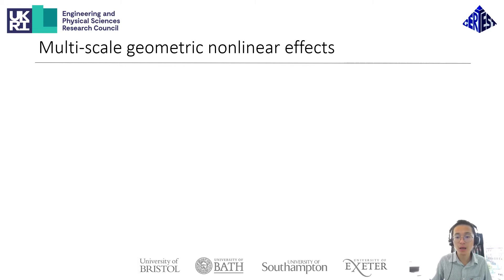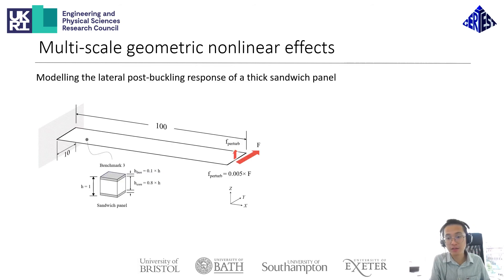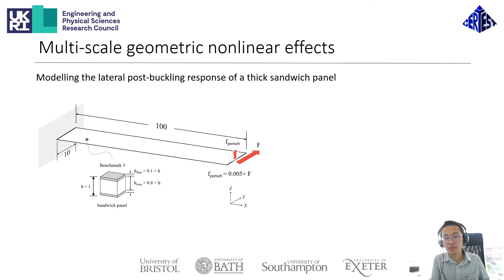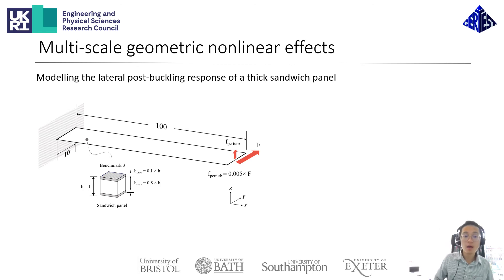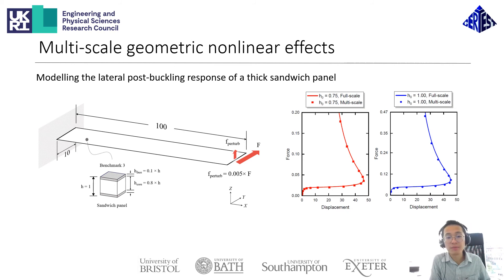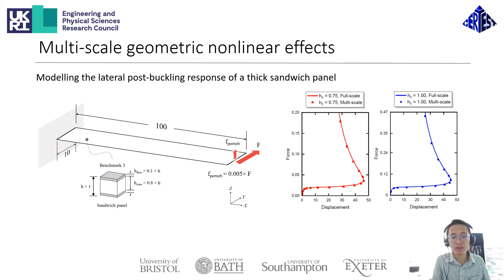Now, back to the multi-scale framework for shell models — we have validated it in geometric nonlinear cases. Here I have a sandwich panel that is subjected to a lateral shear load at the tip plus an eccentric load. Eventually this panel will buckle in the lateral direction and fold back under itself, which results in strong strain localization near the root. This causes quite severe geometric nonlinear effects both at the macro and also the mesoscopic length scales. Here I'm showing a comparison between the multi-scale and full-scale model solutions for different panel thickness values, and as you can see, there is very good agreement between the two sets of models.